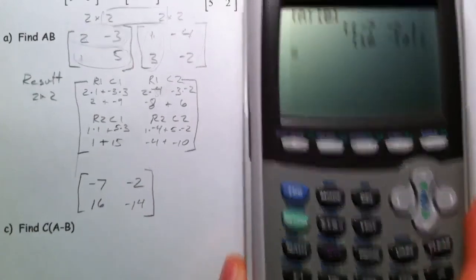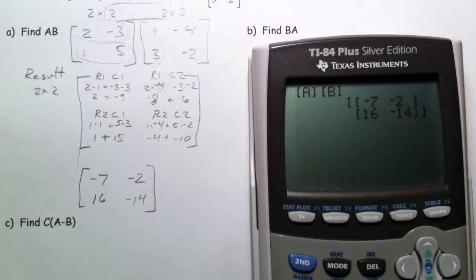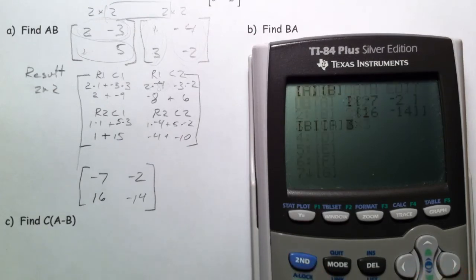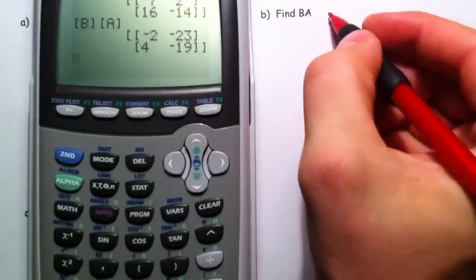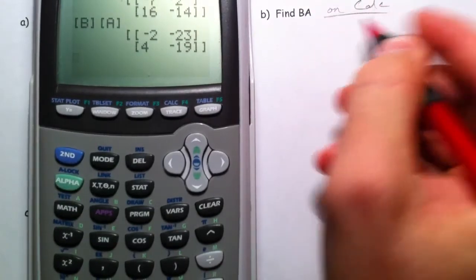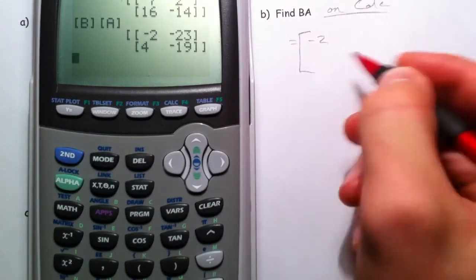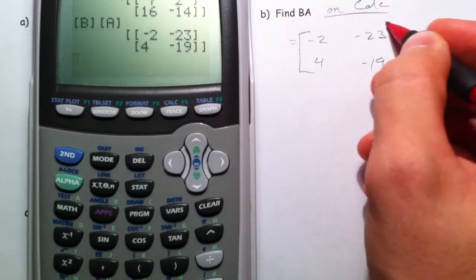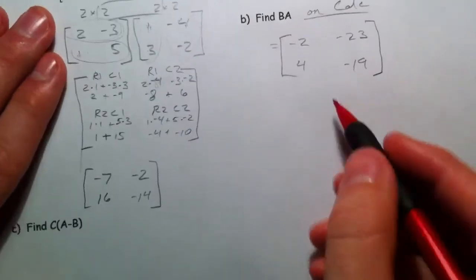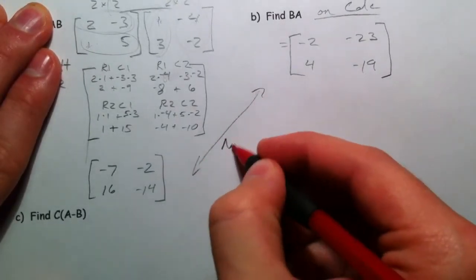So what we're going to do now is I just want to show you and we'll do it on the calculator. Matrix B times matrix A is not the same thing. Negative 2, negative 23, 4, negative 19. So what we take out of this, not equal.